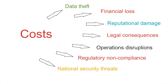Number five is operational disruptions. When there is a cyber attack, there is bound to be operational disruptions, and this is going to cost the business money and productivity. When there is data loss, system outages, and network disruptions because of the cyber attacks, this is going to be time consuming to repair and it is going to be very expensive. When you are not able to operate your business because you have experienced a cyber attack, it is going to be very expensive.